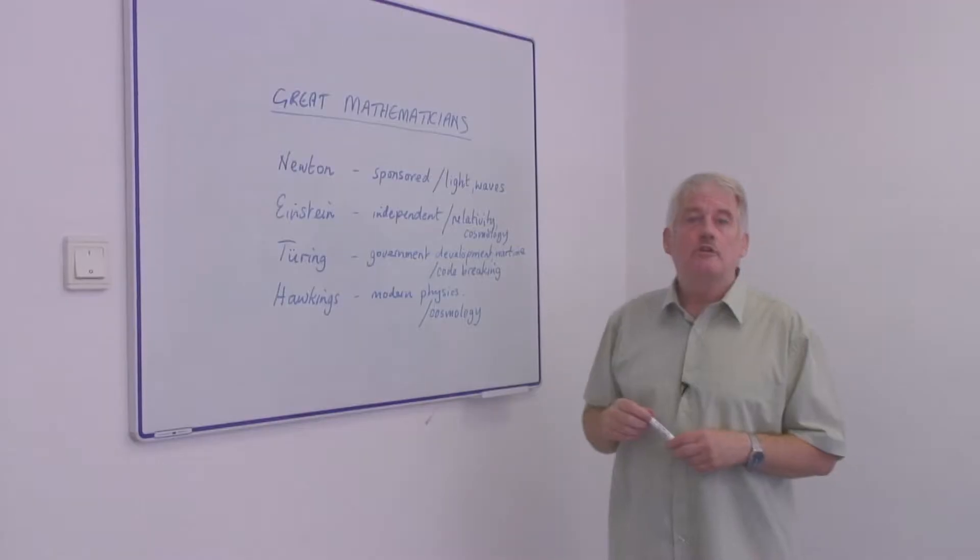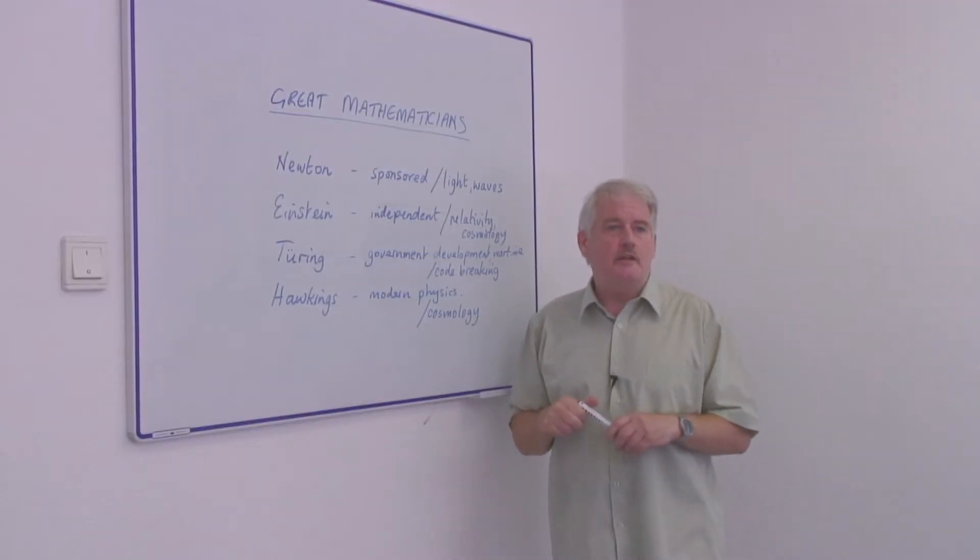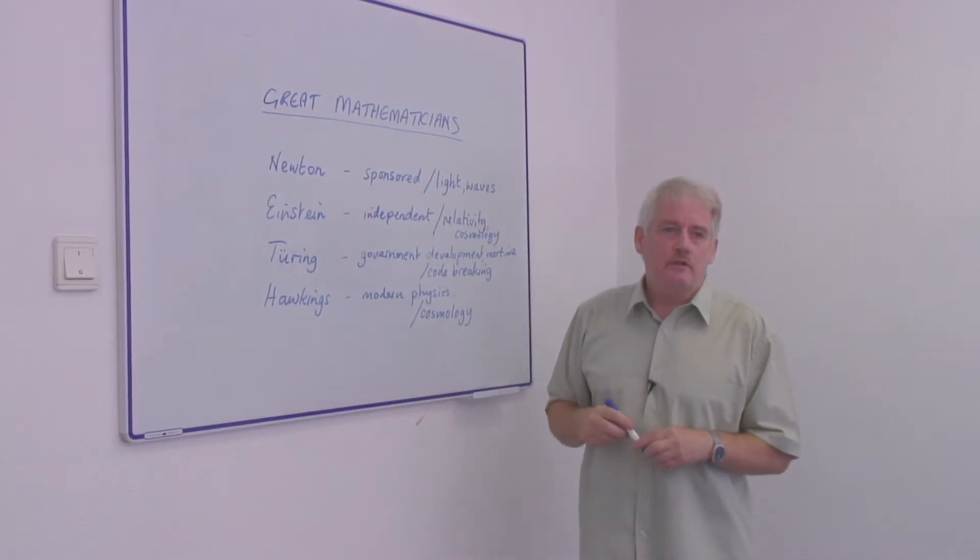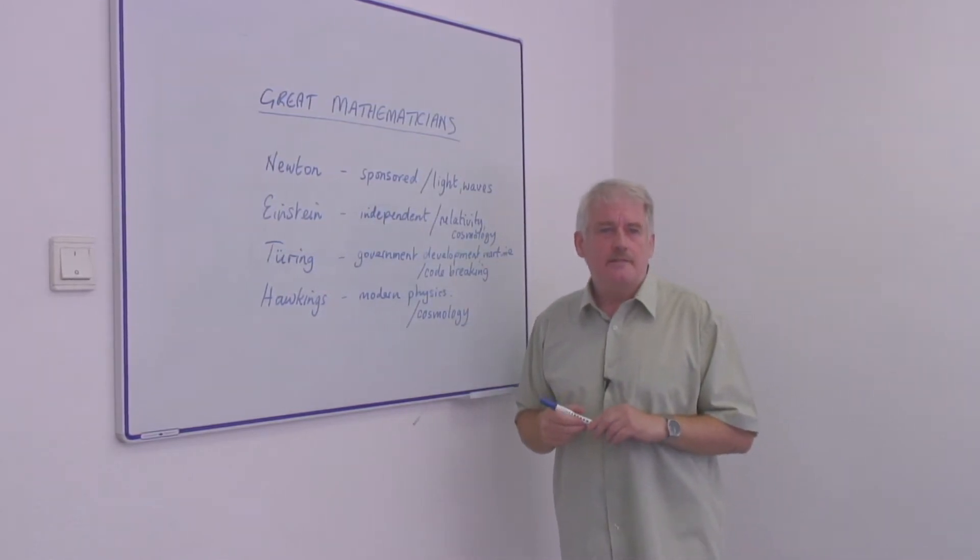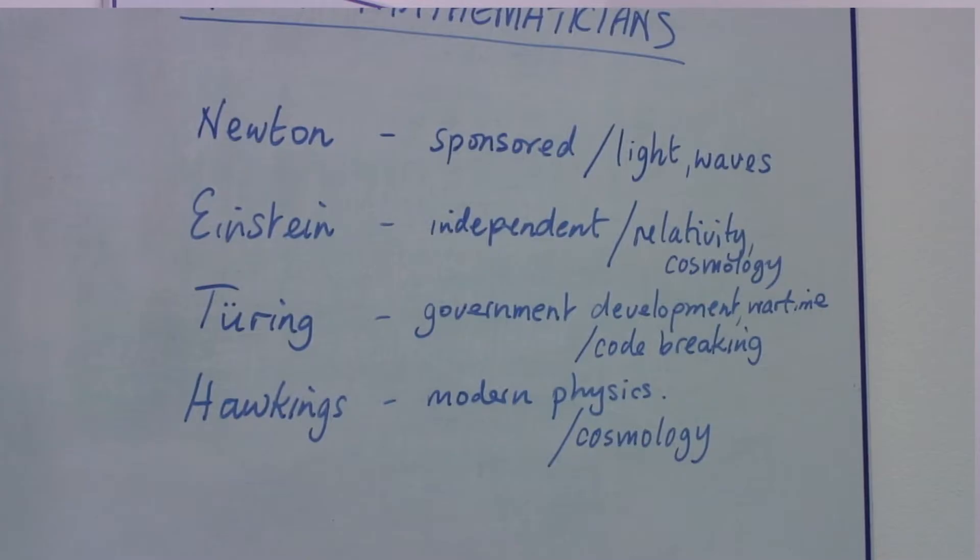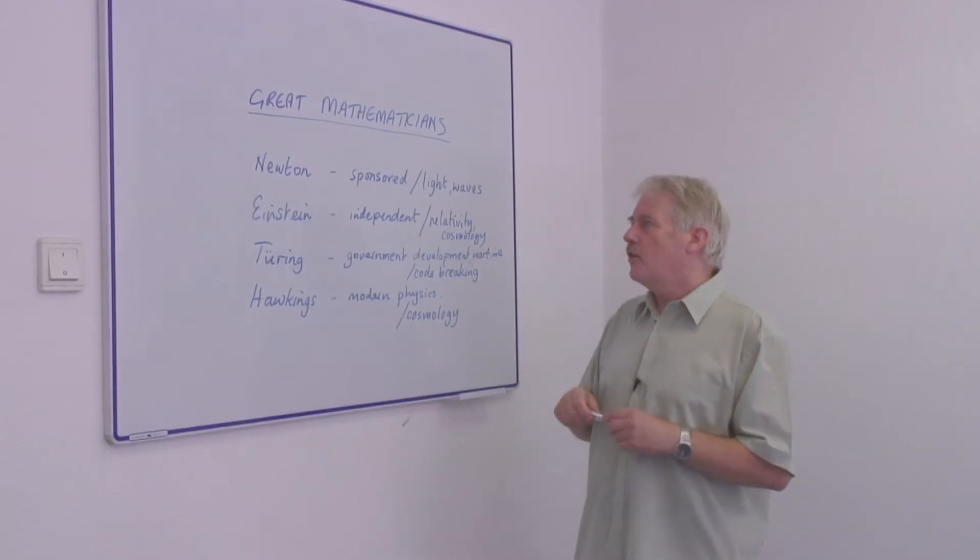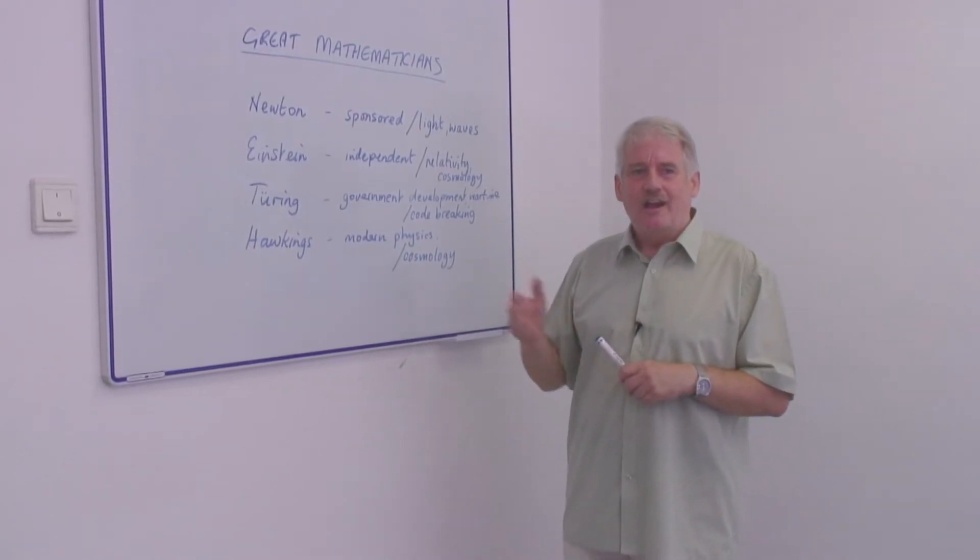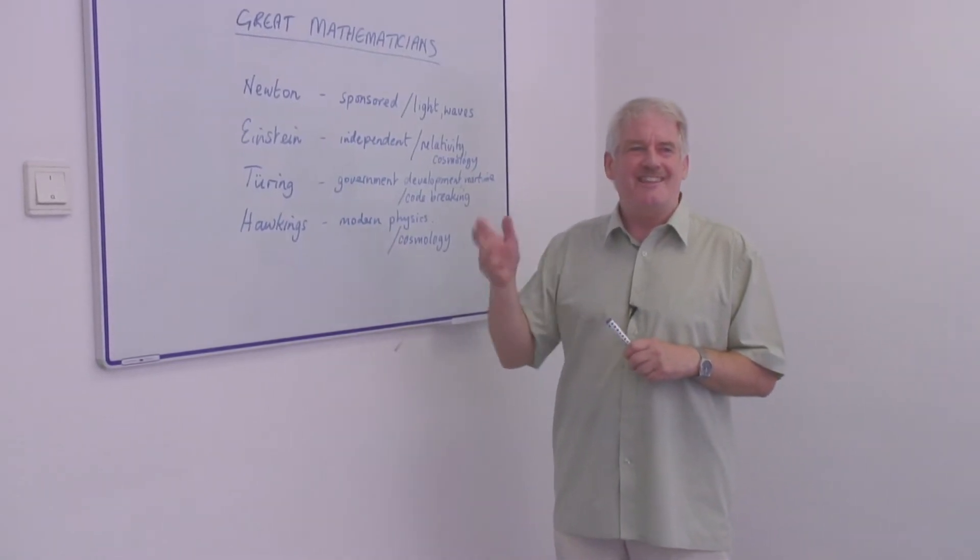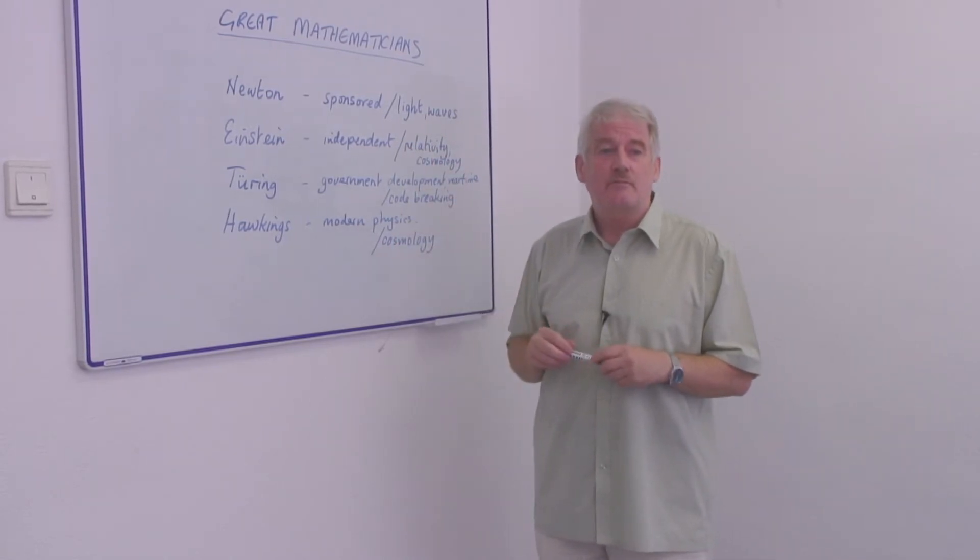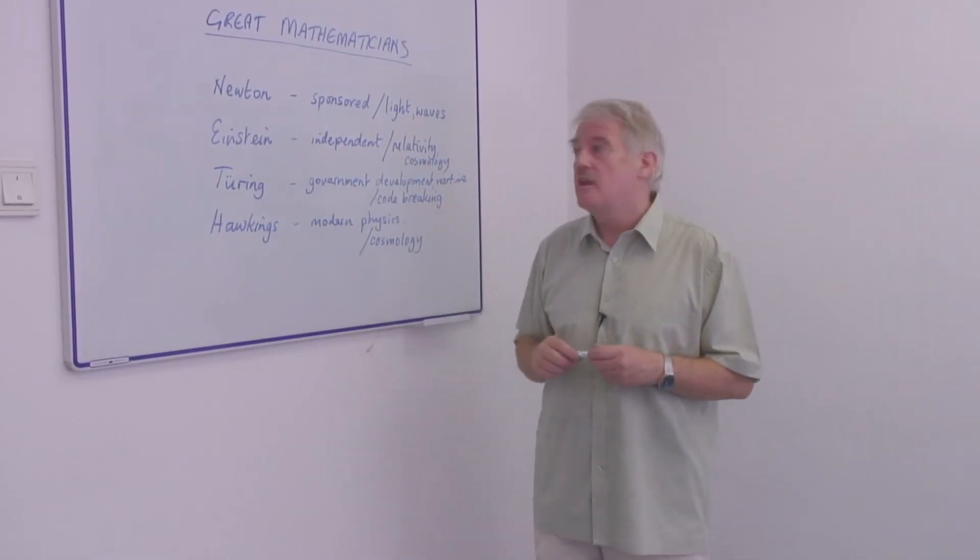Newton worked independently on his own. He was sponsored by rich people but in time became rich himself. His investigation into light and wave theory were very important. But he also looked at other aspects of science and although he was working in the science field, this was something that was very different from mathematicians previous to him.